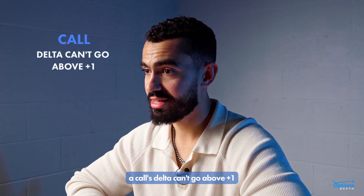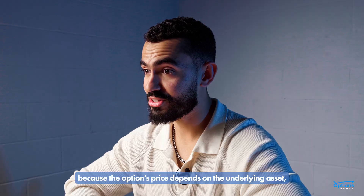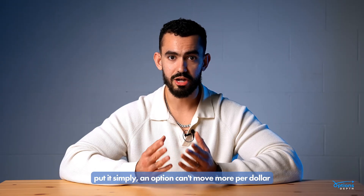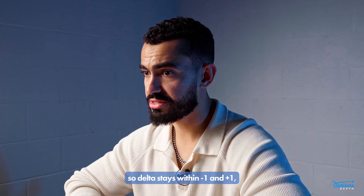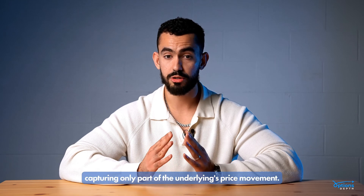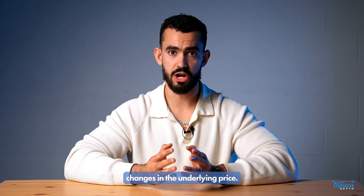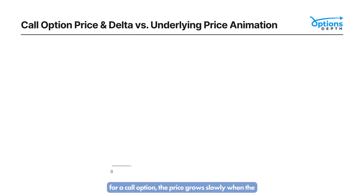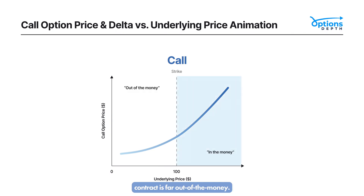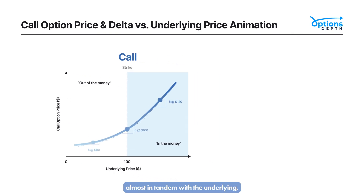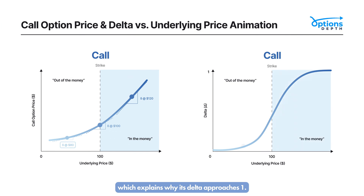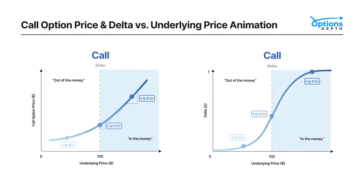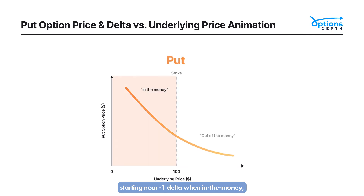This negative Delta shows that the put option's value increases when the underlying asset's price decreases. A call's Delta won't go above +1 and a put's Delta won't go below -1, because an option can't move more per dollar than the underlying does. Delta stays within -1 and +1, capturing only part of the underlying's price movement. For a call option, the price grows slowly when the contract is far out of the money, speeds up as it gets closer to at the money, and once it's deep in the money, the option price moves almost in tandem with the underlying — which explains why its Delta approaches 1, a near 1-to-1 relationship. A put option shows a mirror pattern, starting near -1 Delta when in the money, slowing down around at the money, then dropping off further once out of the money.